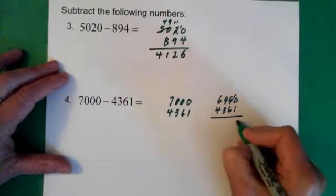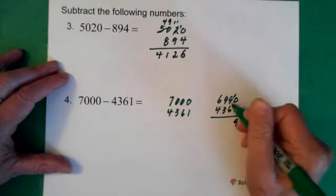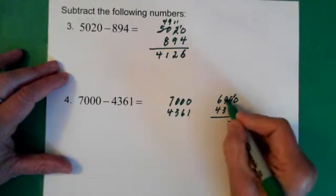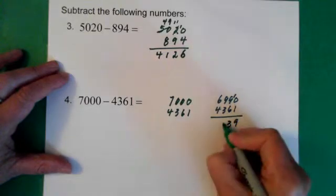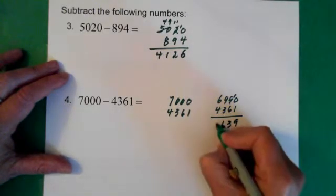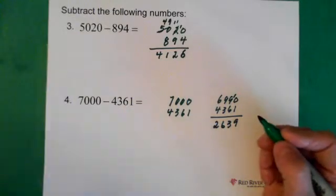10 minus 1 is 9. 9 minus 6 is 3. 9 minus 3 is 6. 6 minus 4 is 2.